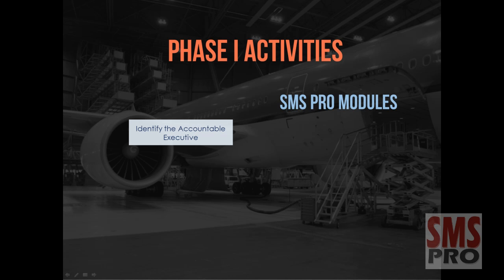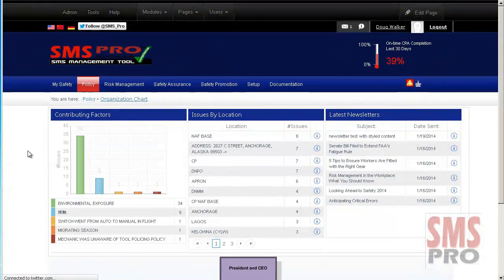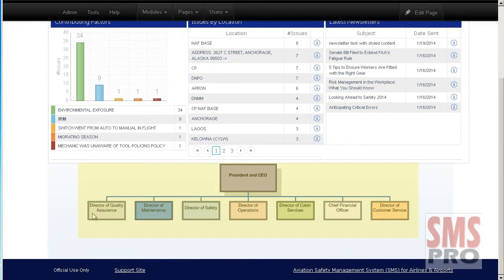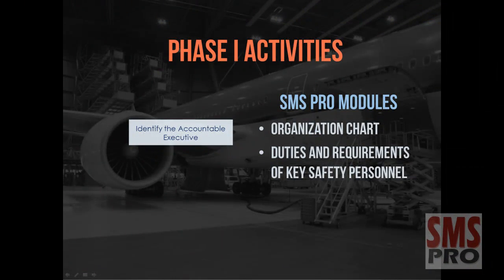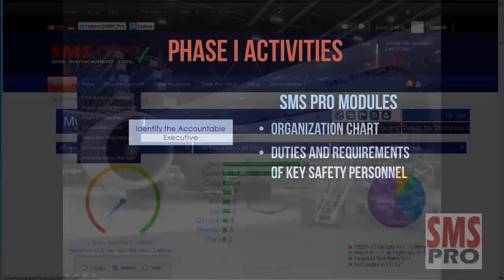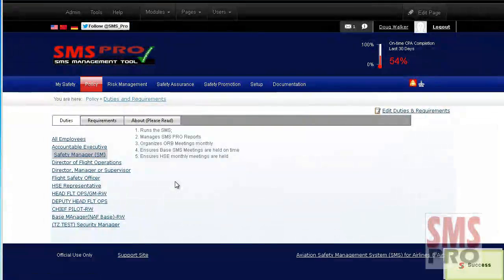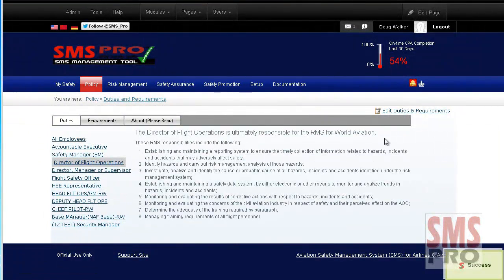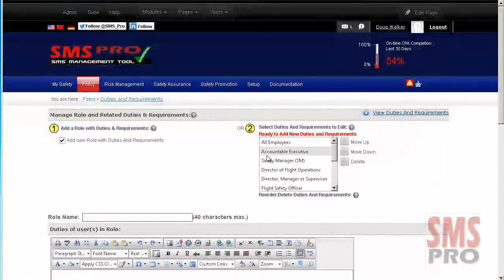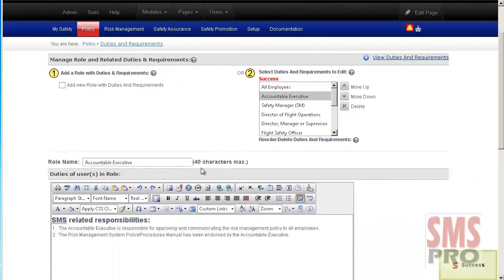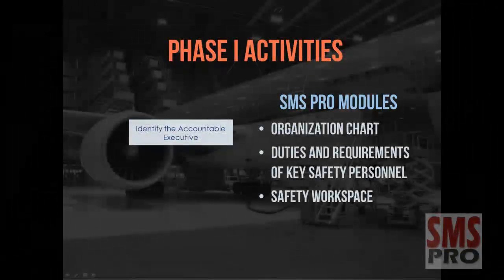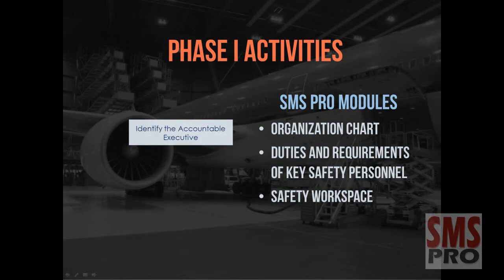Using SMS Pro, this can be achieved through the use of the Organization Chart Module and the Duties and Requirements of Key Safety Personnel Module, where the descriptions of the responsibilities of safety personnel can be easily viewed and updated. And in the Safety Workspace of the Dashboard, you can find the Safety Officer Information.